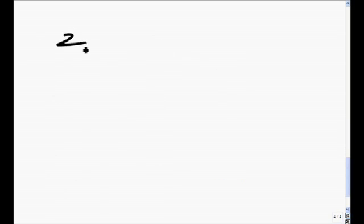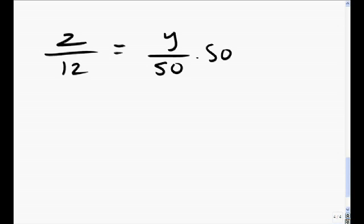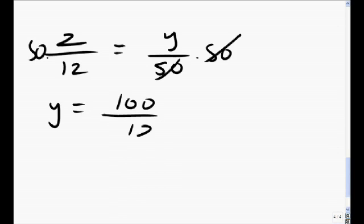The 2 tablespoons of sugar to 12 cookies is some Y tablespoon of sugar to 50 cookies. Multiply both sides by 50. Using algebra, we get Y is 100 divided by 12. This is the number of tablespoons of sugar required for 50 cookies.